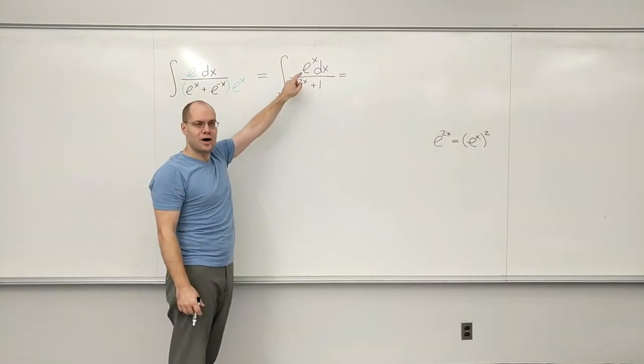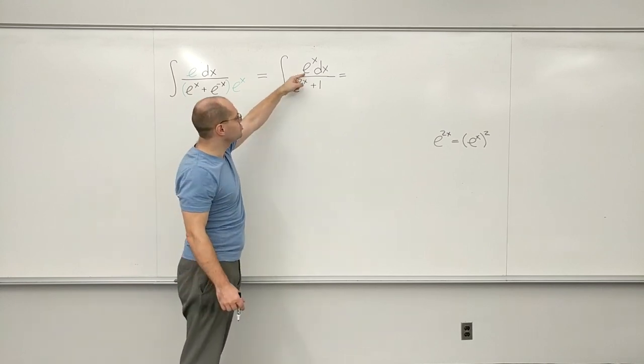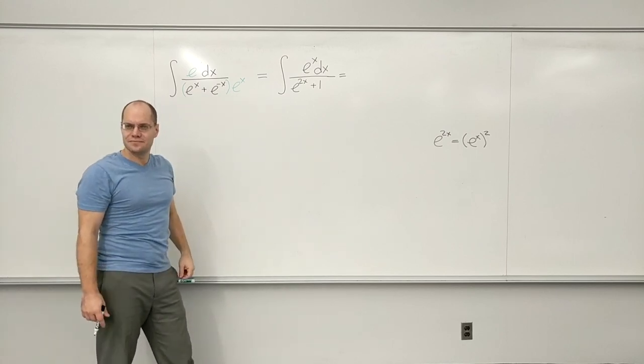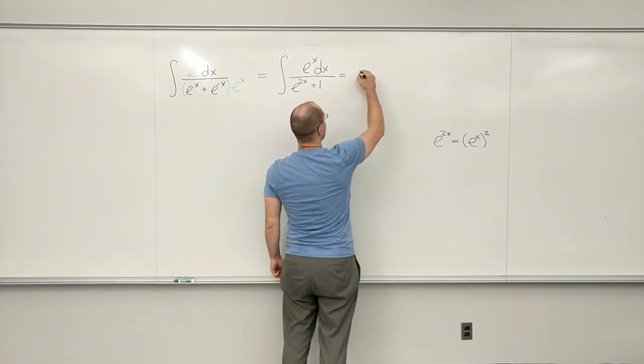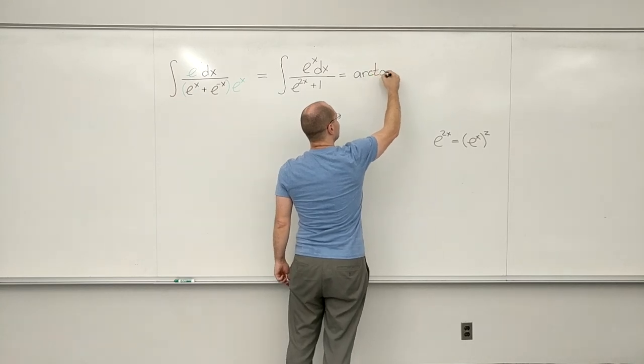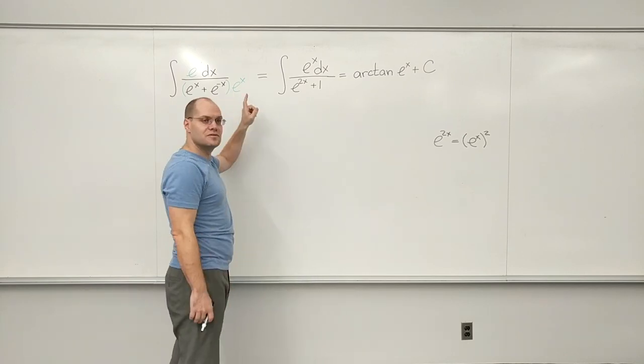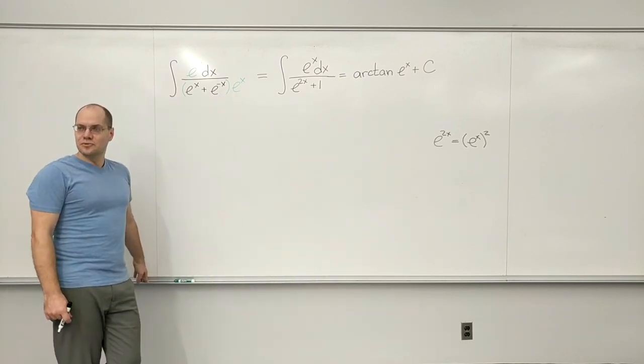So we have 1 over 1 plus something squared, which is e to the x, times the derivative of that something. So at this point, you should just go straight to the answer, given all of the good work we've done until now. Moving on.